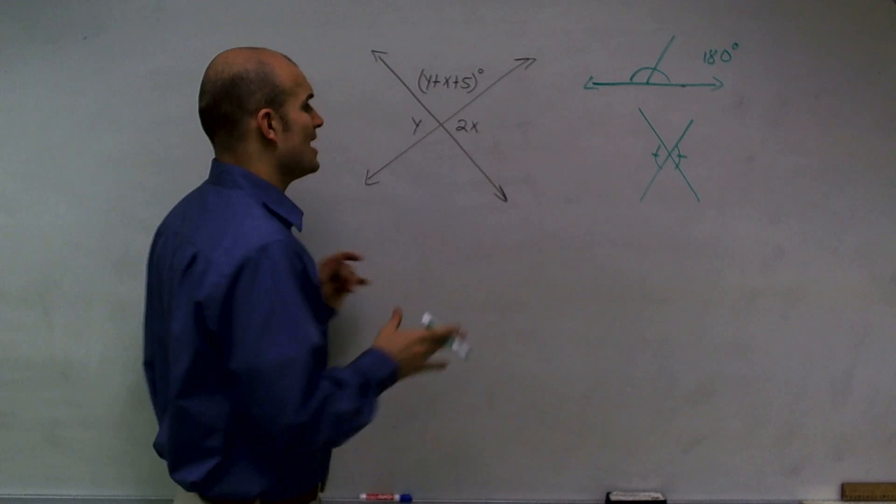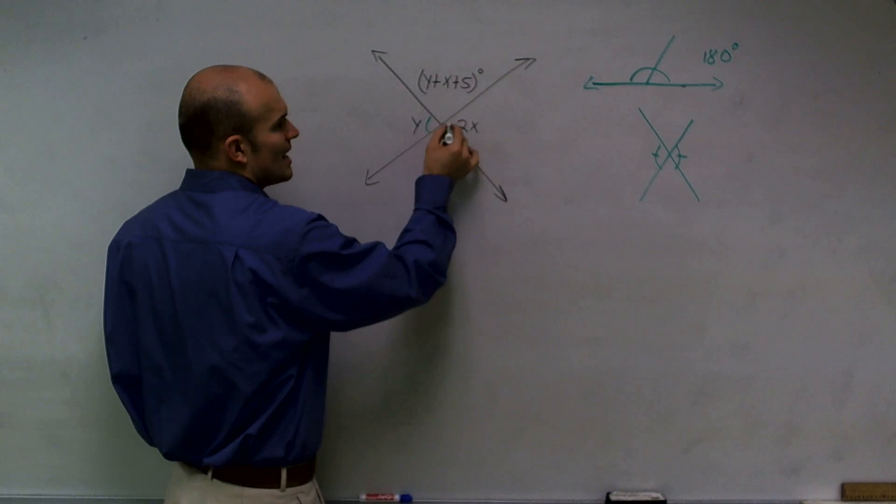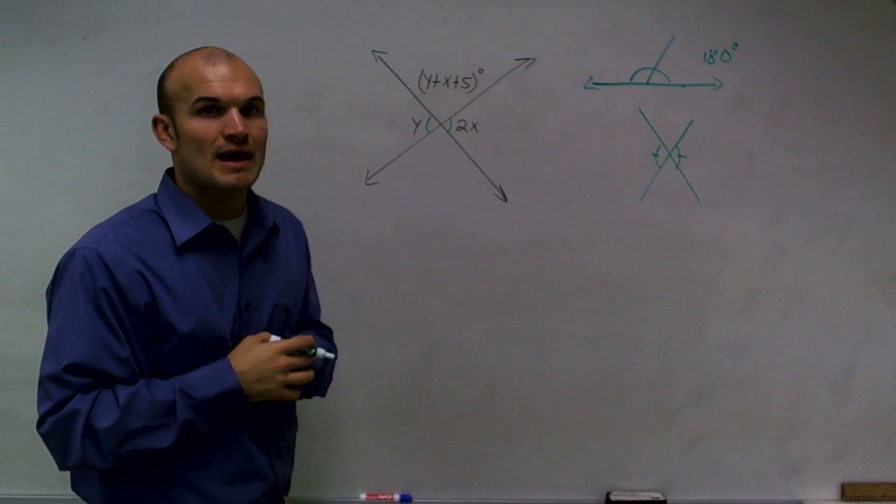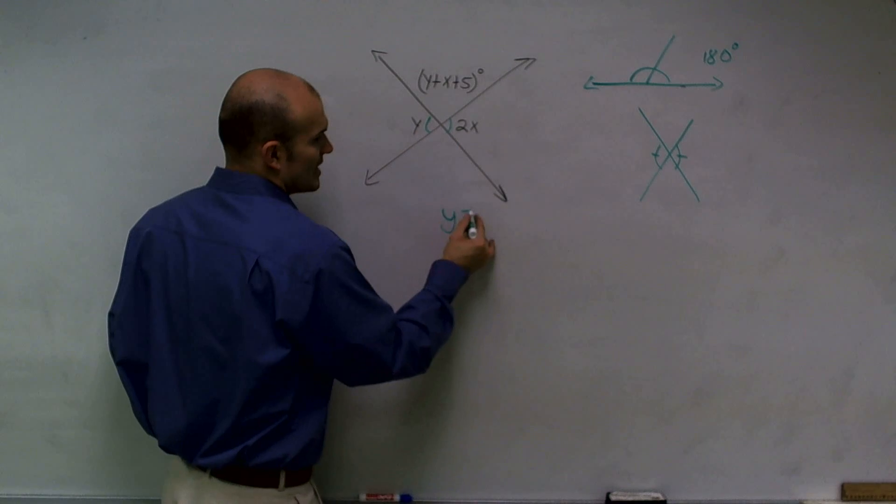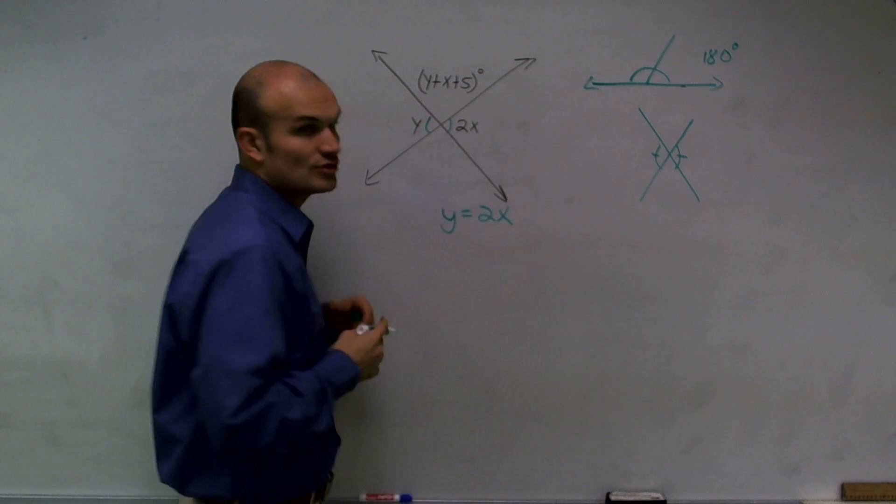Taking that in mind, if I have y and 2x, these are two angles that are opposite each other at intersecting lines. Therefore, I can say y equals 2x.